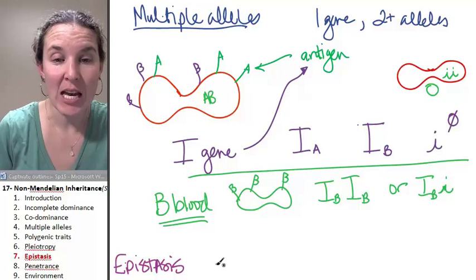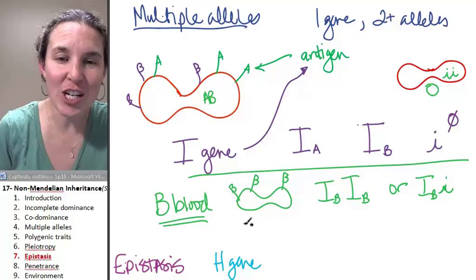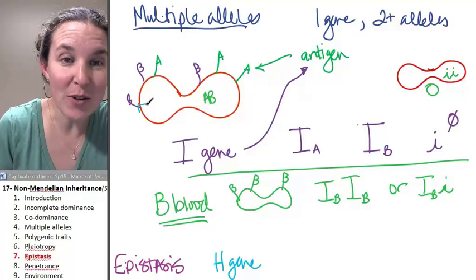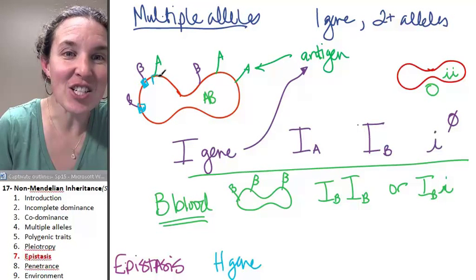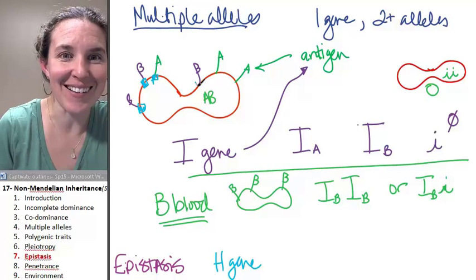There's another gene. It's called the H gene, and the H gene codes for a protein that holds the antigens into the red blood cell. What? How cool is that?